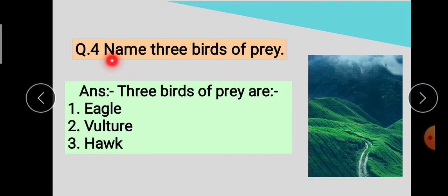Question number 4 is: Name three birds of prey? कि तीन example देने हैं birds of prey के. तो answer है: Three birds of prey are - Eagle, Vulture, Hawk.